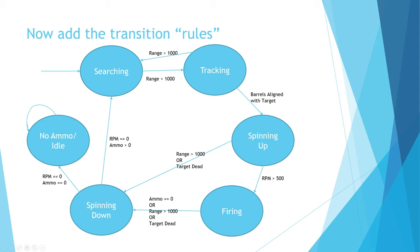We sit in the spinning down state, slowing those barrels down. Every time the function is called, we slow them a little bit until our RPM is zero. There are two reasons we can leave this state. If our RPM is zero and our ammo is zero, we go to no ammo idle. But if our RPM is zero and we've still got ammo, then we go to searching.